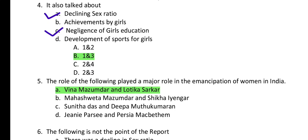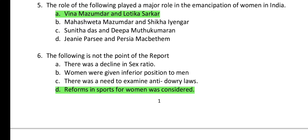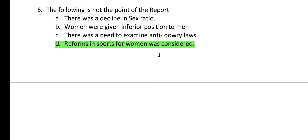Question 5: Who played a major role in the emancipation of women in India? The answer is Veena Mazumdar and Lotika Sarkar. Question 6: Which of the following is not a point of the report? The answer is D — reform in sports for women. Options A, B, and C were all included in the report; D was not.